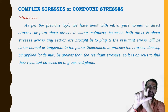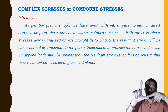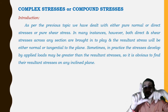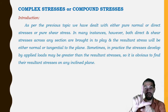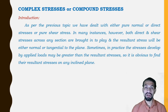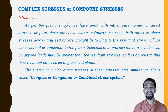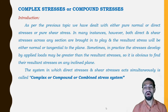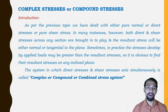If one force acts downward and another acts downward, the resultant acts in that combined direction. If one force acts outward and one acts inward, the resultant acts accordingly. The system in which direct stress and shear stress act simultaneously is called complex stress, compound stress, or combined stress — all three terms mean the same thing.